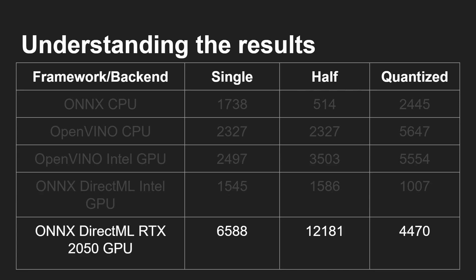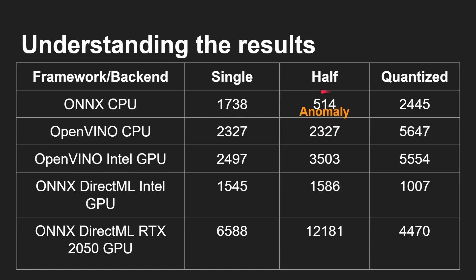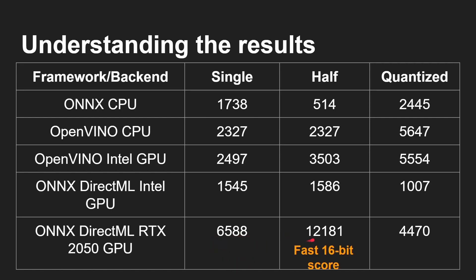Using the RTX 2050 built into this laptop gives a whole different set of scores. There's a strange result where the half precision score is unusually low — that's something to do with how the ONNX framework is handling it internally. The RTX gives the fastest single precision score and the fastest half precision score, significantly faster than the other options. But the quantized score using the NVIDIA GPU is actually less than what you'd get using just the CPU or GPU with OpenVINO.